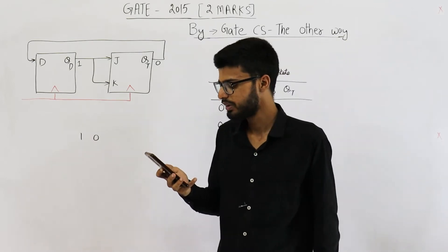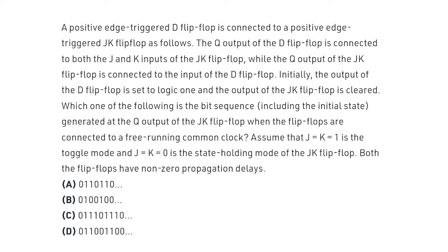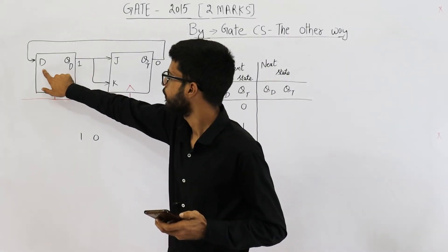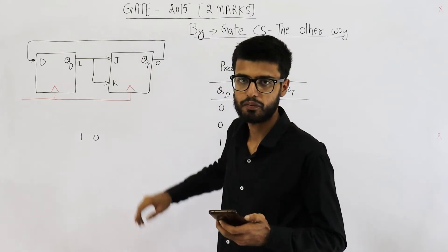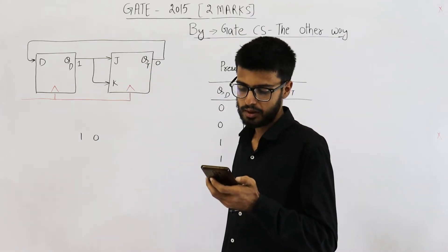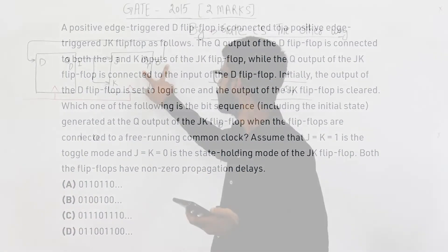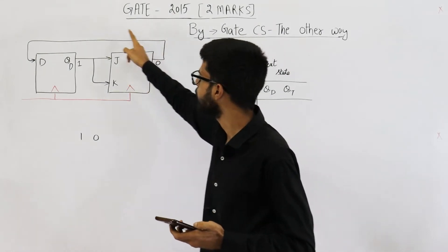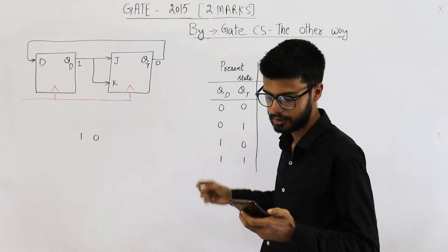So a positive edge triggered D flip-flop is connected to a positive edge triggered JK flip-flop as follows. The Q output of the D flip-flop is connected to both J and K inputs of the JK flip-flop. While the Q output of the JK flip-flop is connected to the input of the D flip-flop. This is how this circuit is designed.